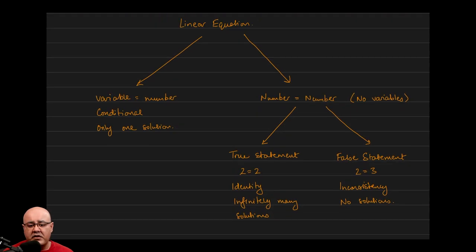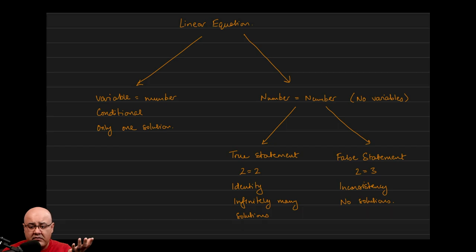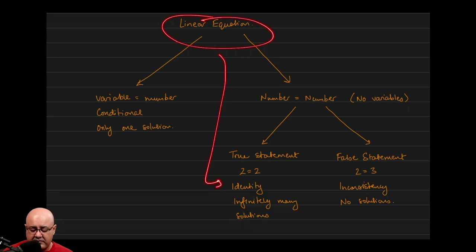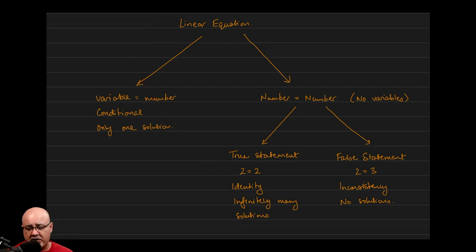If instead of ending with a variable equals a number, you have no variables left over — just number equals number — there are two possibilities. You'll either get a true statement like 2 equals 2, or a false statement like 2 equals 3. If you get a true statement, the original equation is classified as an identity. Identities have infinitely many solutions — every number you can think of, whether positive, negative, or a fraction, will work.